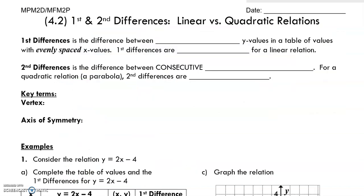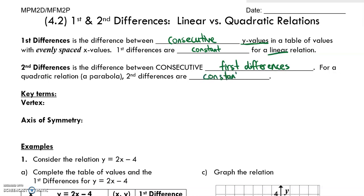First differences we likely have experience with from last year. First differences is the difference between consecutive y values in a table of values with evenly spaced x values. The first differences are constant if we have a linear relation — that's what we discovered in grade nine. Second differences is the difference between consecutive first differences. For a quadratic relation, second differences are constant.